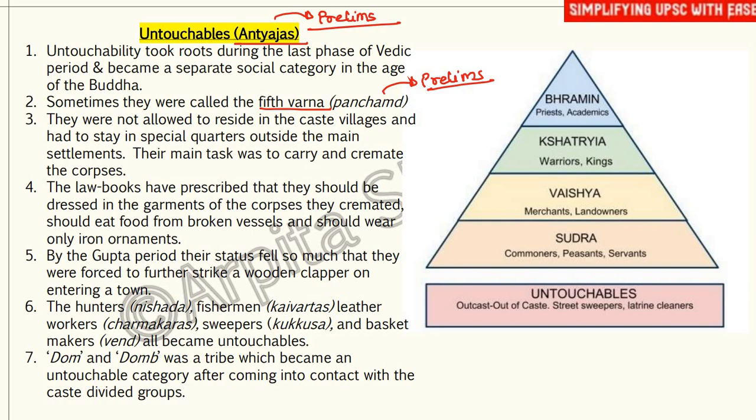Law books prescribed that untouchables should be dressed in the garments of corpses they cremated, eat food from broken vessels, and wear only iron ornaments. That reflects the nature of exploitation prevalent in the later Vedic period. By the Gupta period, their status fell so much that they were forced to strike a wooden clapper on entering a town.